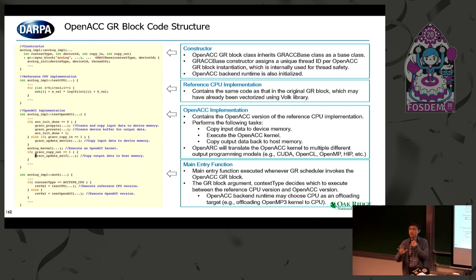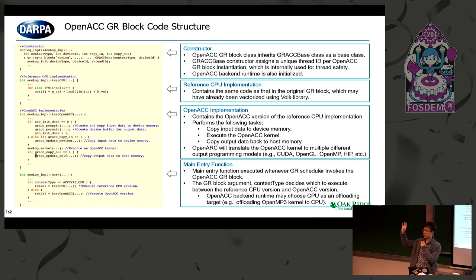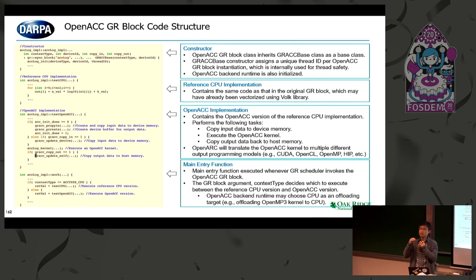In each OpenACC block, we provide two implementations: one is the reference CPU implementation, which is exactly the same as the original GNU Radio block, and the other is the OpenACC implementation — the OpenACC version of the reference CPU version. If you write the basic OpenACC implementation, it performs three types of tasks: at the beginning of invocation, it copies data from host memory to device memory and launches the device kernel; and at the end of execution, it copies the result back to host memory.